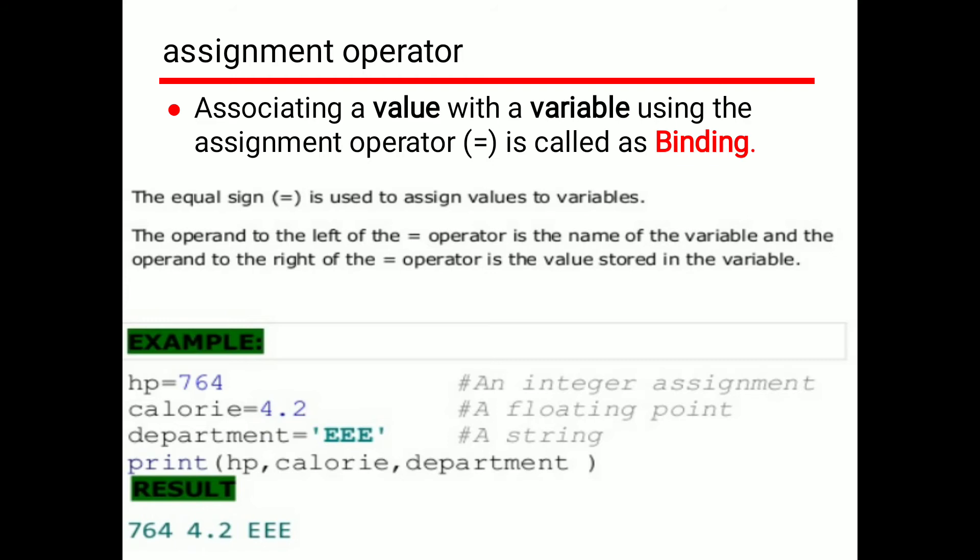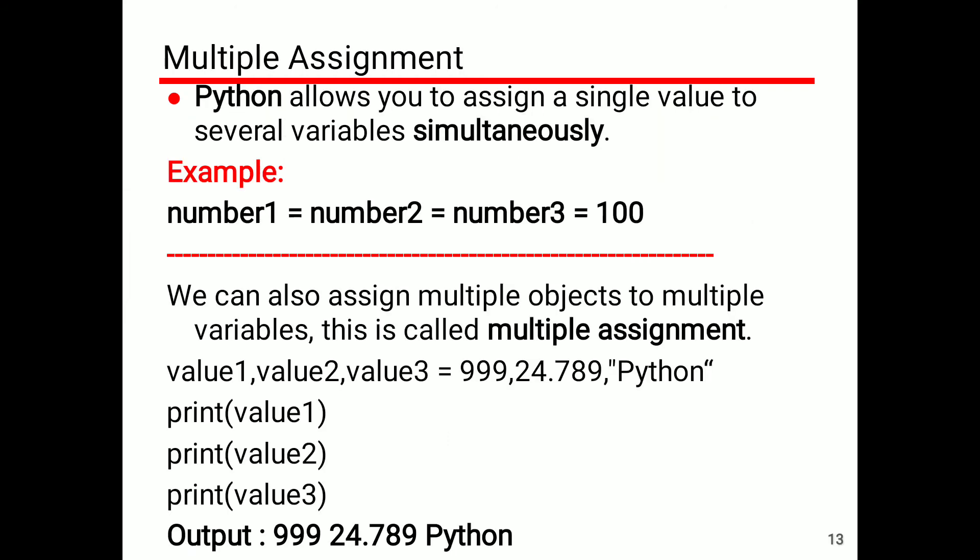Example: HP = 764, calorie = 4.2, department = 'EEE'. Print HP, calorie, department. The result displays 764, 4.2, EEE. Here HP is an integer, calorie is a float (because it has a decimal point), and EEE is a string.